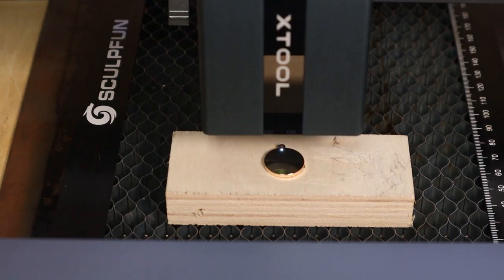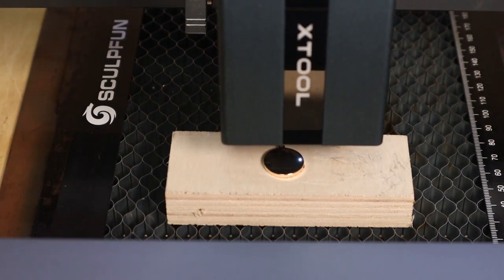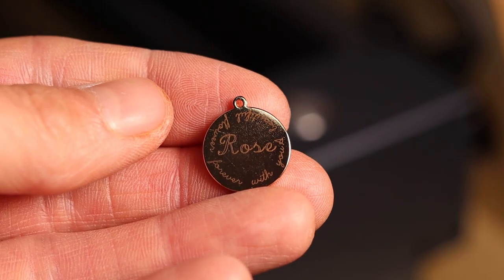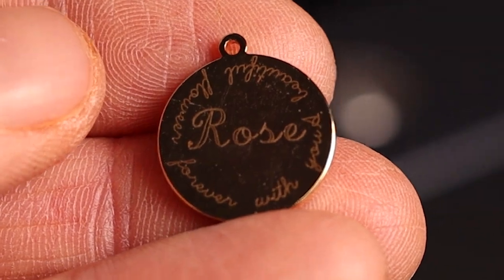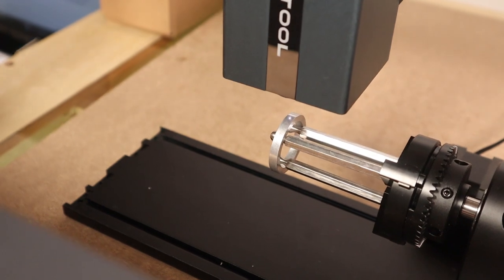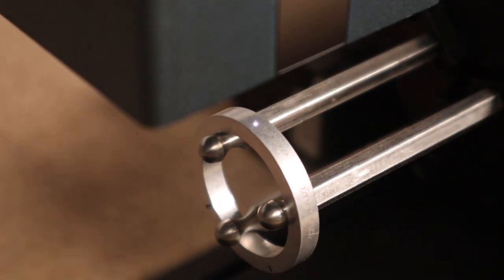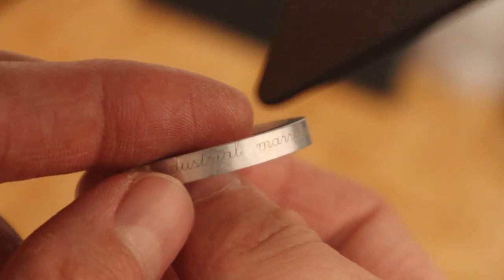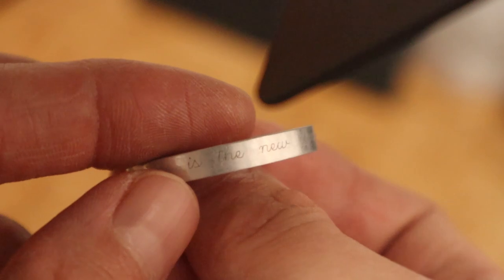I tried to engrave some fake jewelry. Since this laser module has very compressed spot, you can engrave very small text. I also tried to engrave an aluminum ring using the Xtool RA2 rotary attachment that I have previously reviewed.